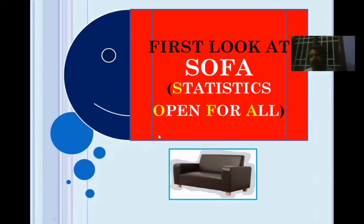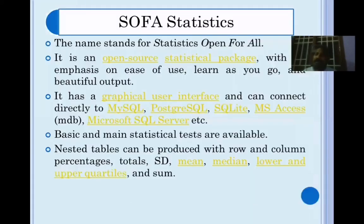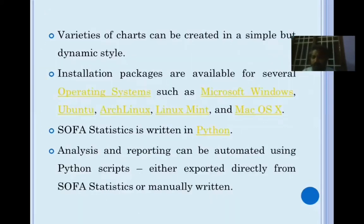In the second part of this presentation, we will talk about the practical aspects of SOFA statistics. SOFA stands for Statistics Open For All — it is an open source package written in Python with a graphical user interface (GUI). It integrates with databases like MySQL, PostgreSQL, SQLite, and MS Access, and is available for Windows, Ubuntu, Linux, and Mac. You can also write your own Python scripts for different statistical tools.